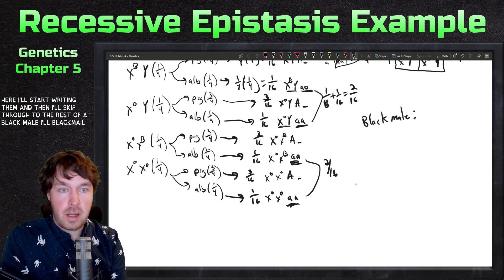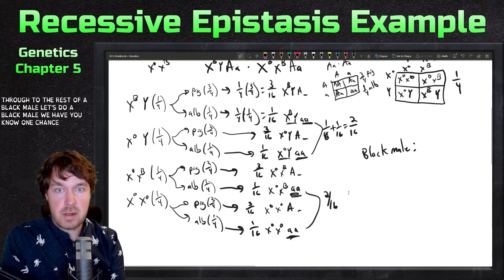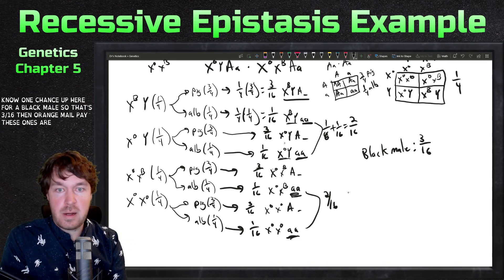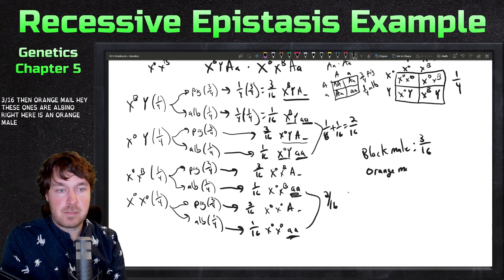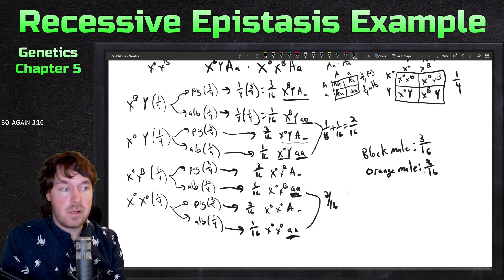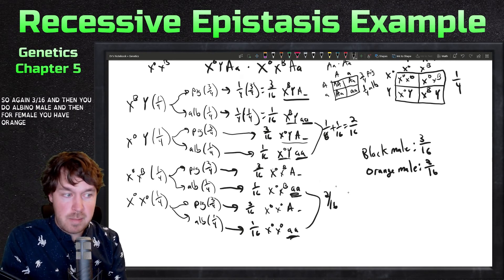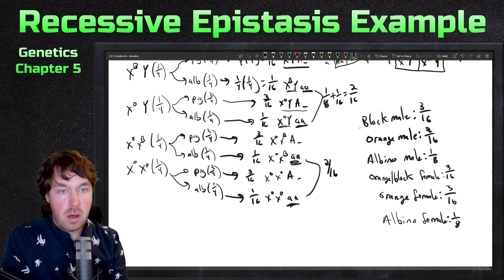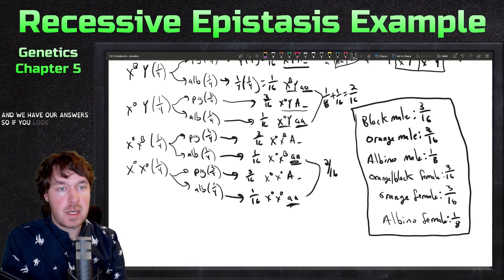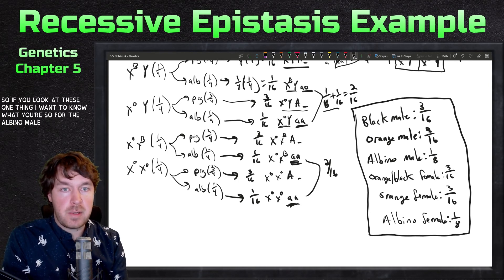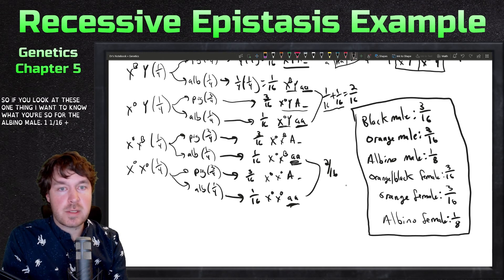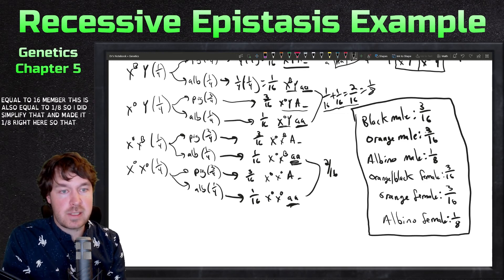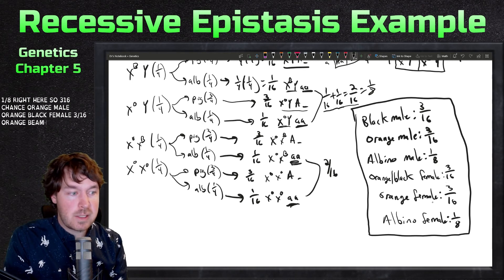I'll start writing them and then I'll skip through to the rest. Black male - we have one chance up here for a black male, so that's three-sixteenths. Orange male - these ones are albino, right? Here's an orange male - again three-sixteenths. Then you can do albino male, and then for female you have orange-black female, orange female, or albino female. I'm just going to write the rest of the answers out real fast. We have our answers. For the albino male, one-sixteenth plus one-sixteenth is equal to two-sixteenths. I did simplify that and made it one-eighth.